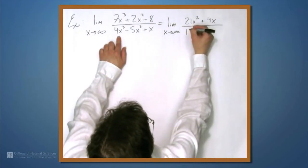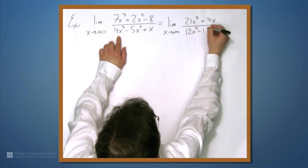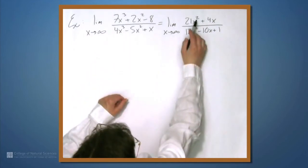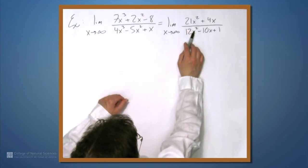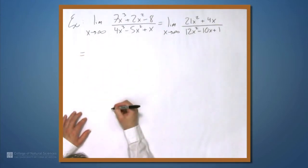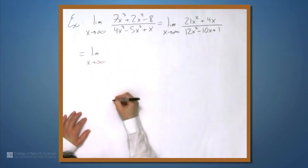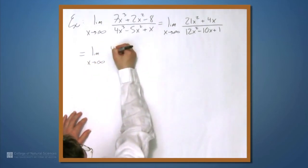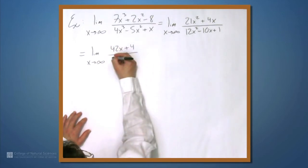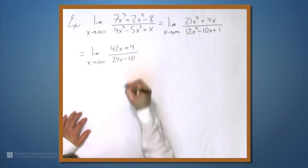Our denominator becomes, similarly, 12x squared minus 10x plus 1. Well, now we have something going to infinity over something going to infinity once again. So we can apply L'Hopital's rule once again.